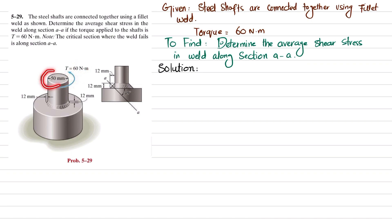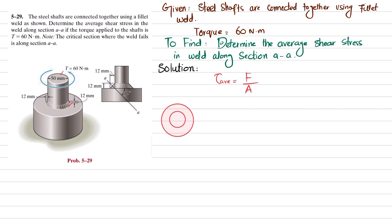Find the average shear stress in the weld section along section AA. We know that average shear stress in the weld is equal to shear force per unit area, which is the shear area. If you draw the top view of the shafts, the outer one and the inner shaft — this diameter is 50 millimeters, so this radius is 25 millimeters, and this thickness is 12 millimeters.